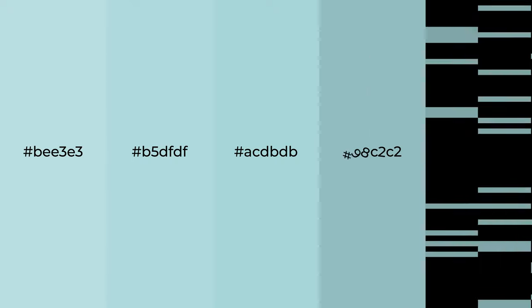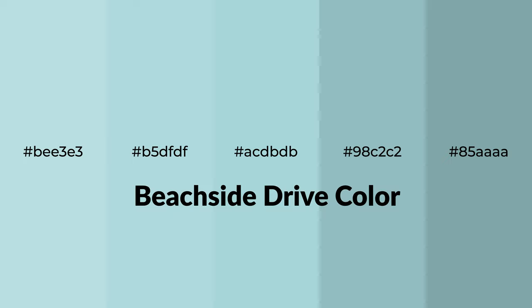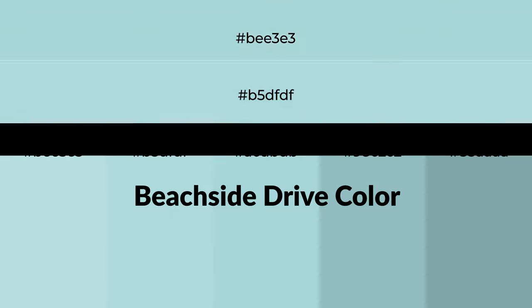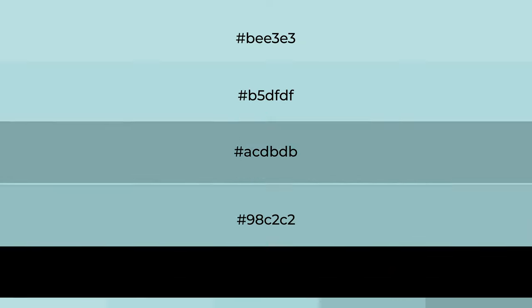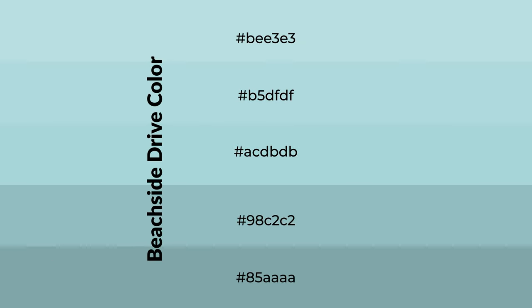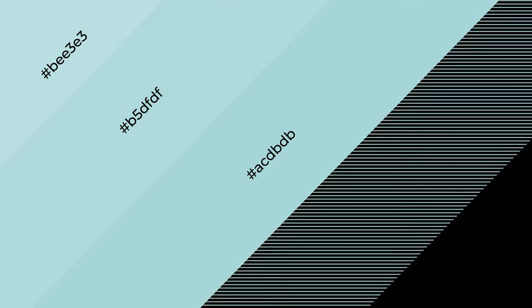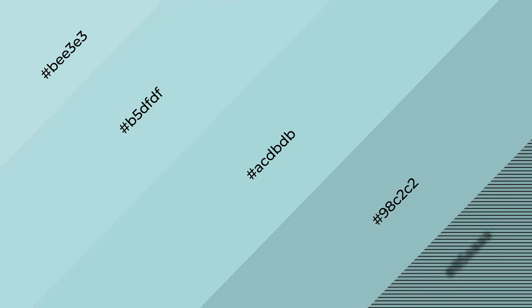Cool shades of Beachside Drive color with green hue for your next project. To generate tints of a color, we add white to the color, and tints create light and exquisite emotions. To generate shades of a color, we add black to the color, and it is used in patterns, 3D effects, layers — and shades create depth and drama.